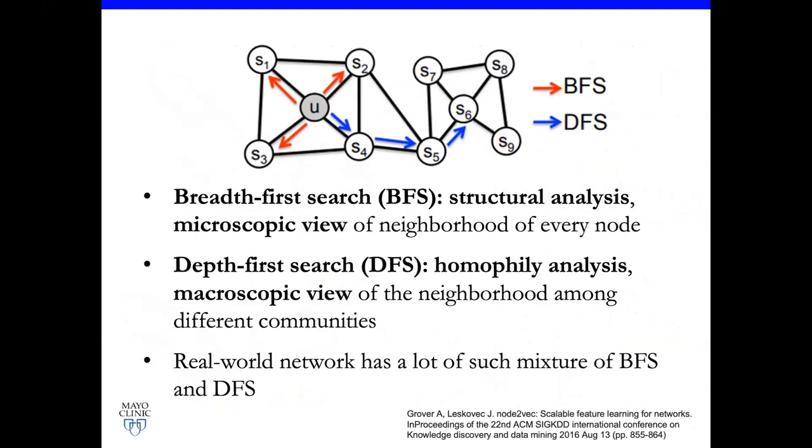In contrast, DFS, depth-first search, because the nodes tend to go all the way to the bottom of the graph, they have a global view of the graph. They can better understand who is my first-degree friend, who is my second-degree friend, who is my third-degree friend. They have a macroscopic view of the neighborhood. But the real-world data, such as this COVID-19 network data, has a lot of mixture, so we need a mixture of BFS and DFS to do the similarity measurement.